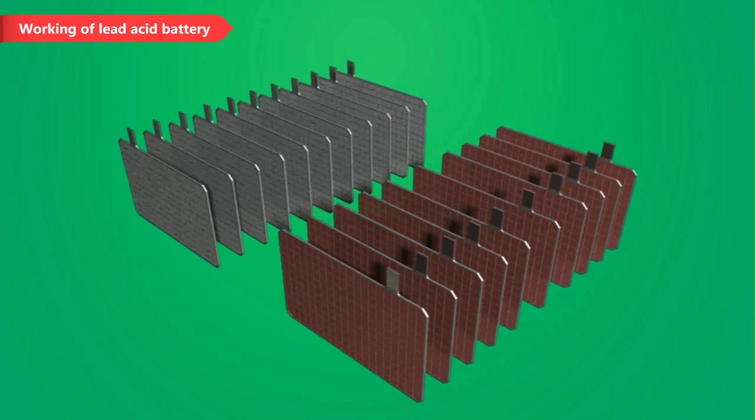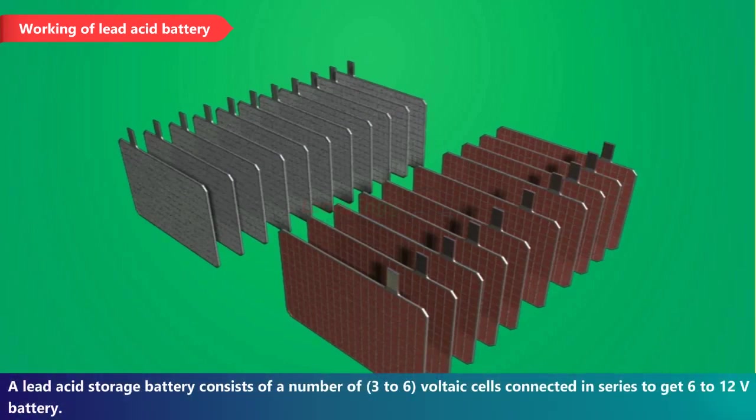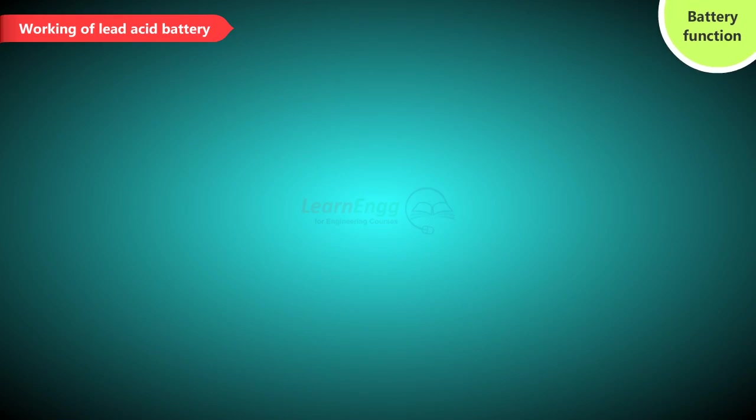Now we will try to understand the principle working of lead acid battery. Working of lead acid battery. A lead acid storage battery consists of a number of 3 to 6 voltaic cells connected in series to get 6 to 12 volt battery.